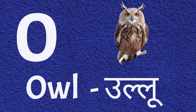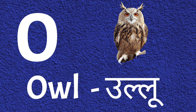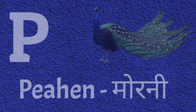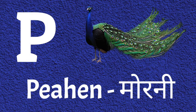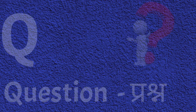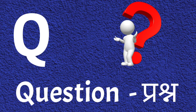O for Aul, Aul means Ullu. P for Pehan, Pehan means Morning. Q for Kyochan, Kyochan means Person.